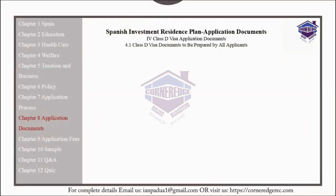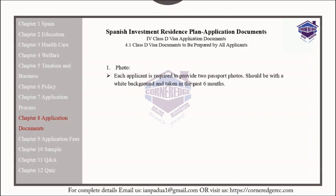The following documents should be prepared by all applicants for their Class D Visa. Each applicant is required to provide two passport photos, which should have a white background and have been taken in the past six months. The dimensions of the photos should be a width of 26 to 35 millimeters and a length of 32 to 45 millimeters.